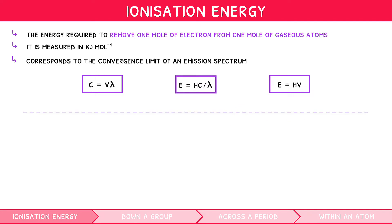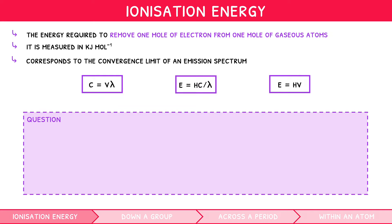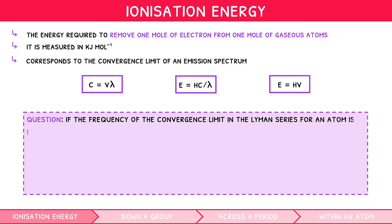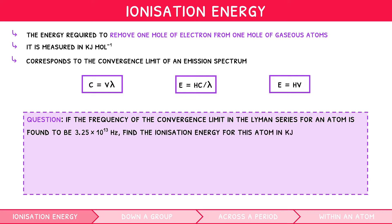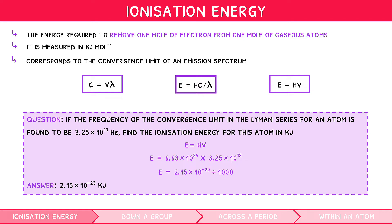Let's take a look at an example question requiring one of these formulae. If the frequency of the convergence limit in the Lyman series for an atom is found to be 3.25 times 10 to the 13 hertz, find the ionization energy for this atom in kilojoules. We would need the equation E equals H times V. Ionization energy would be Planck's constant multiplied by the frequency, then divided by 1000 to convert to kilojoules. The answer would therefore be 2.15 times 10 to the minus 23 kilojoules.